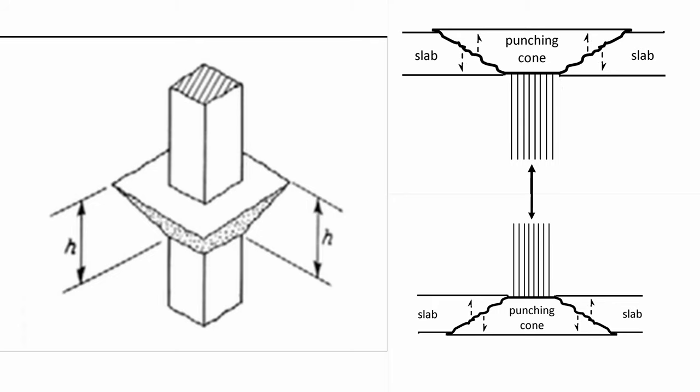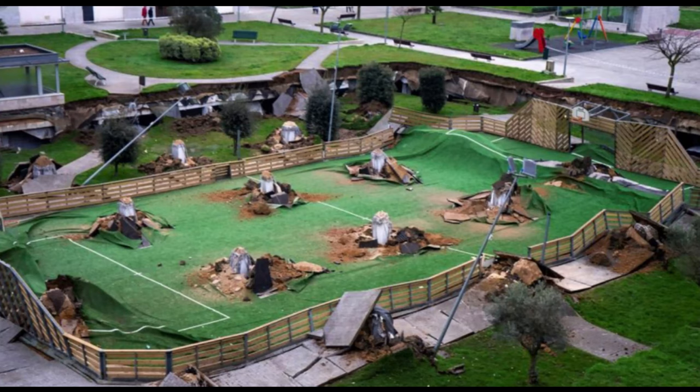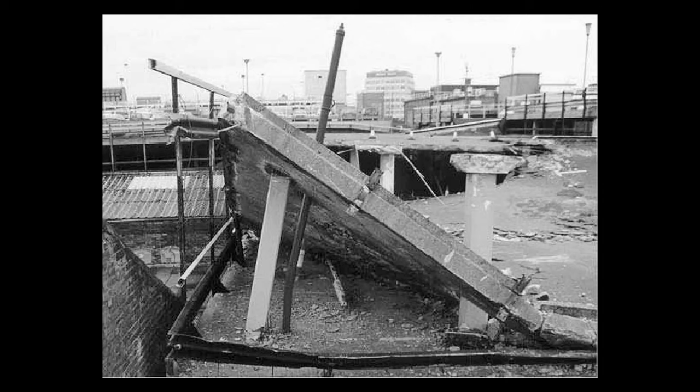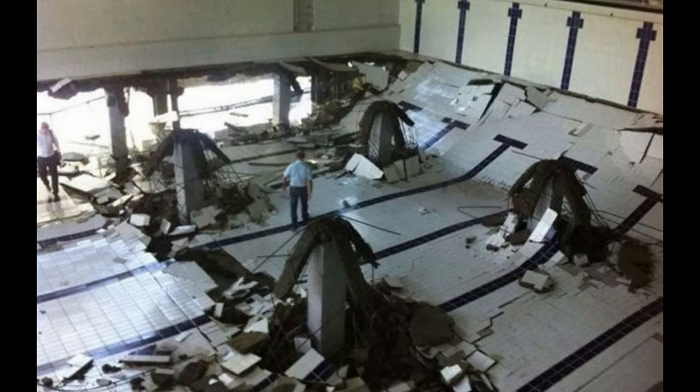What is punching shear? Punching shear is a failure around a concentrated support that's a combination of bending moments and shear forces. They create a perimeter conical failure. As the name describes, it looks as though the concentrated force has punched through the slab — hence the name punching shear.